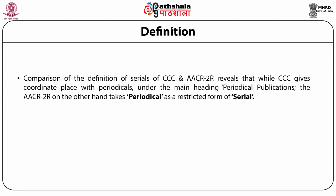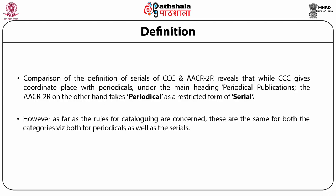Comparison of the definitions of serials in CCC and AACR2 reveals that while CCC gives coordinate place with periodicals under the main heading Periodical Publications, AACR2R on the other hand takes periodical as a restricted form of serial. However, as far as the rules for cataloging are concerned, these are the same for both categories, that is, both for periodicals as well as serials.